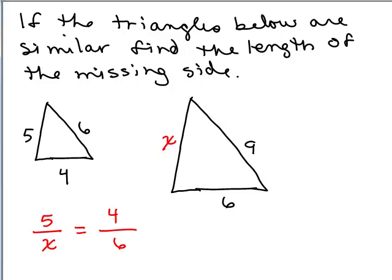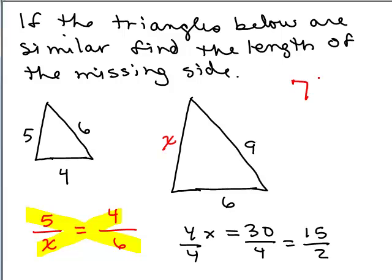And now, we can use proportions so that I can write 4 times X equals 5 times 6, which is 30. And if I reduce that, I get 15 halves. So, that's 7 and a half. So, the missing side is 7 and a half. Now, look at it and see if that makes sense to you. Yep. It's actually 1 and a half times as big. You might have figured it out that way as well.